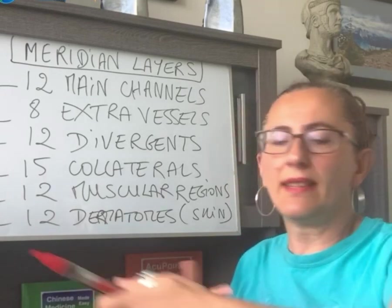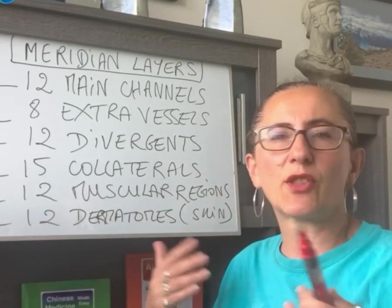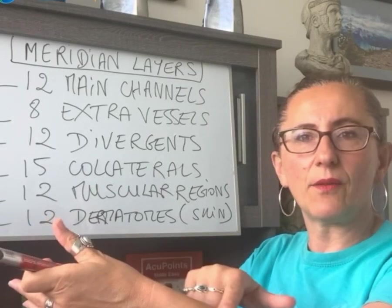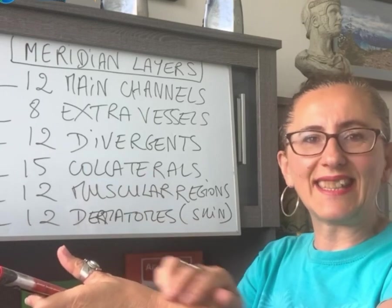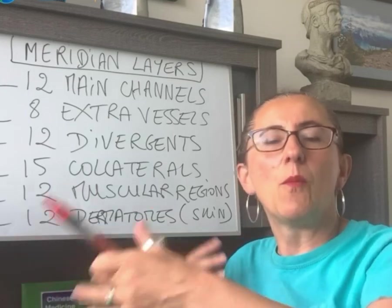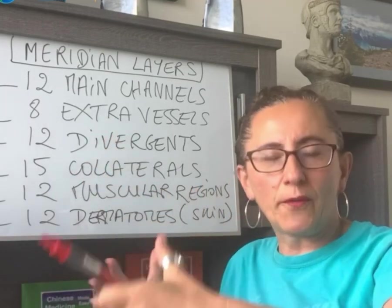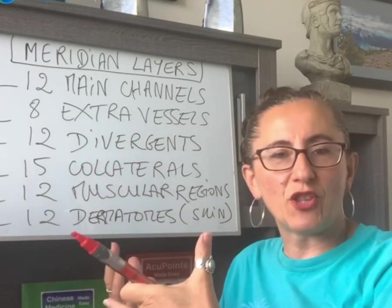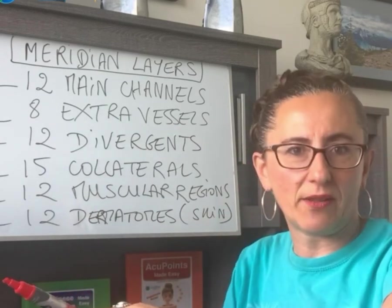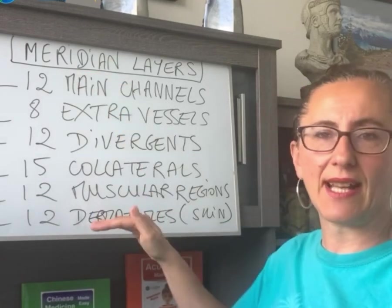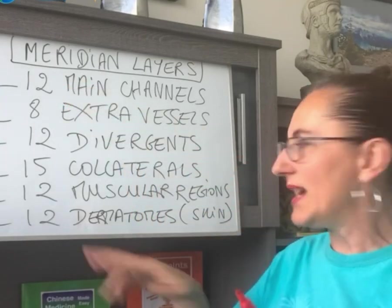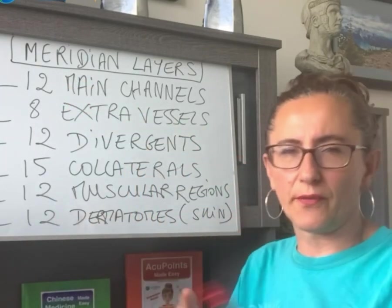So if someone comes in with a skin issue like psoriasis or eczema right on this area here, this is the dermatome of the large intestine. It tells us to look deeper into what's going on with the large intestine meridian, the organ, and the whole energetic being. It helps us find clues — what happens on the skin reflects what's going on inside. Every main meridian has a corresponding dermatome on the outside. The meridian is internal and deep; the dermatome is external and on the surface.